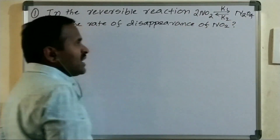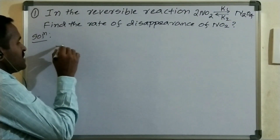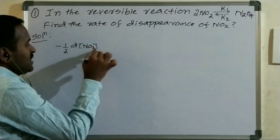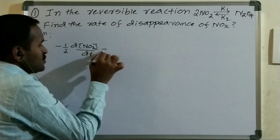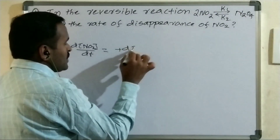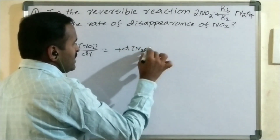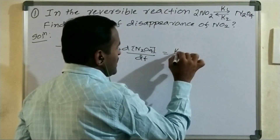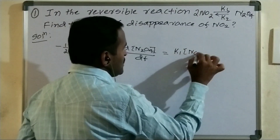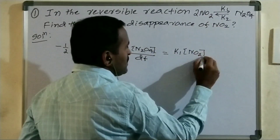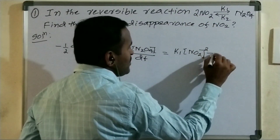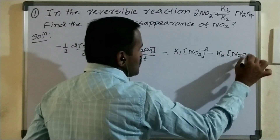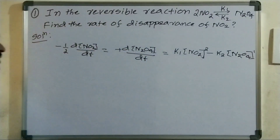So I can write: minus 1/2 × d[NO2]/dt equals plus d[N2O4]/dt, which equals K1 × [NO2] raised to the power of its stoichiometric coefficient, minus K2 × [N2O4] to the power 1.